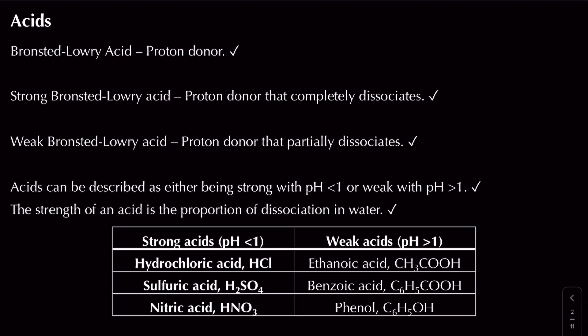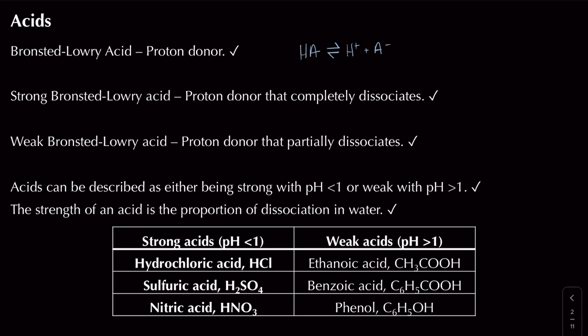In terms of this theory, an acid is a proton donor. If I were to draw an equation to show the process in which HA, our general acid, donates a proton, we would show a reversible reaction arrow — as seen in equilibrium — and we end up forming H⁺ and A⁻. This is our general equation for an acid dissociating.